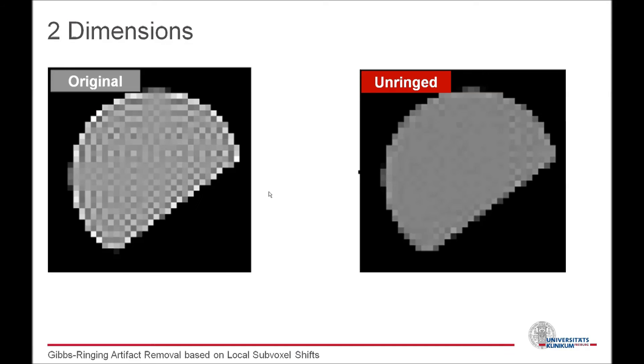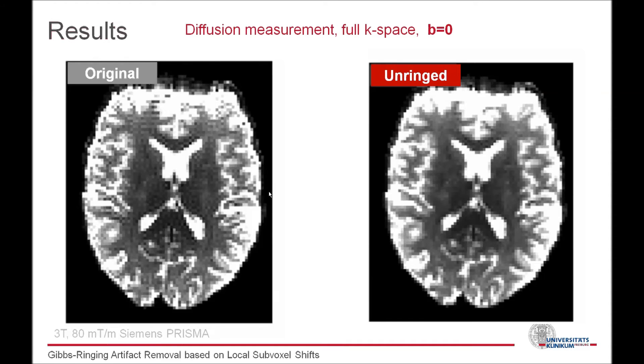And here come some results from real life. This is a diffusion-weighted EPI sequence acquired at a 3T device with very strong gradients. You can clearly see the ringing artifact in the B0 image, at the neighborhood of the sharp edges, for example around CSF. The method removes them while preserving the edges.